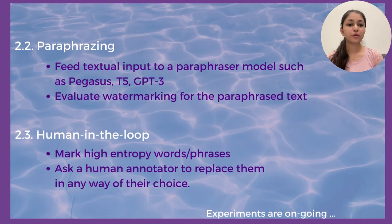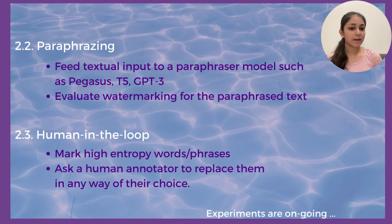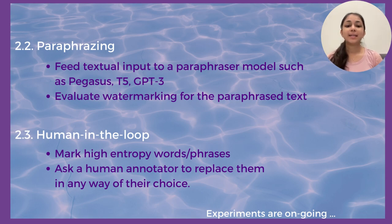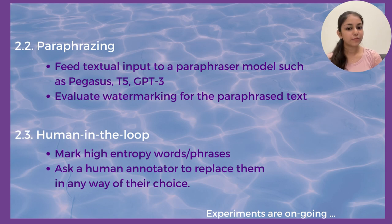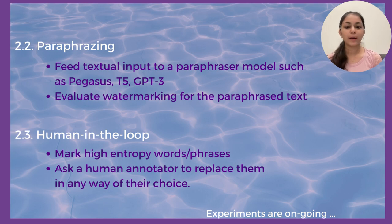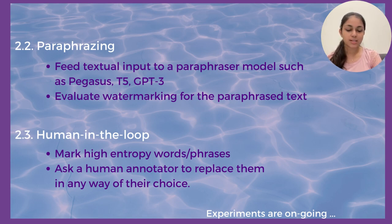We are also experimenting with two other ways of removing watermarks. The first is paraphrasing, where we feed the AI-generated text to a paraphraser model and then evaluate for watermarking in the paraphrased text. The second is human-in-the-loop, where we have already identified the high entropy words and ask a human annotator to replace those words with a word of their choice. These experiments are ongoing but we hope to see successful de-watermarking results.